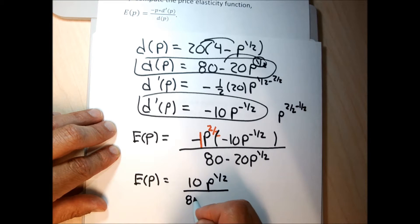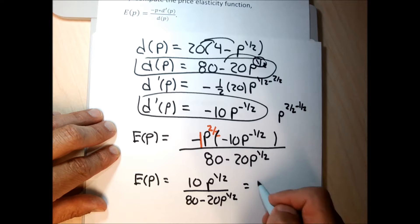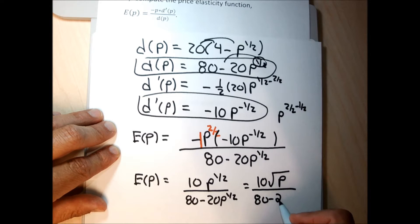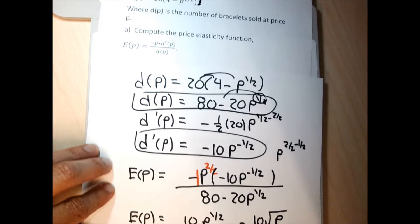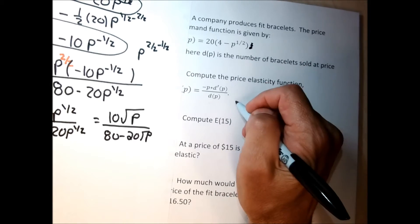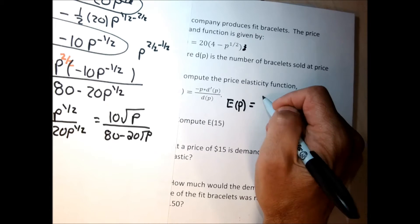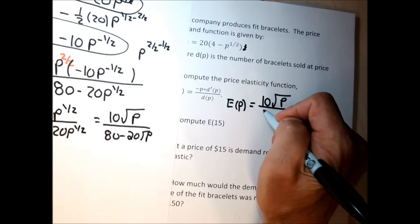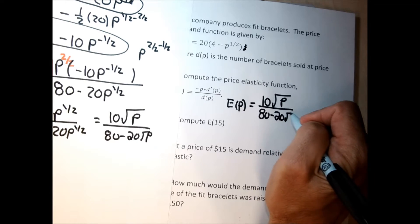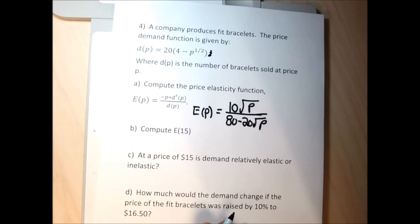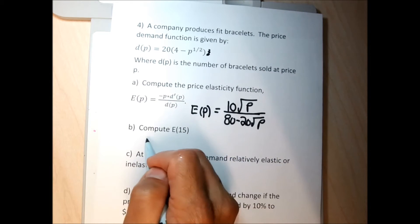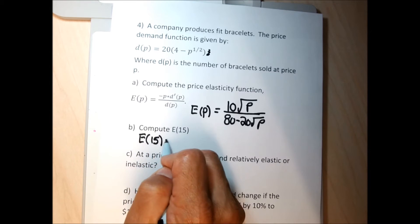So the answer to part A is E(P) equals 10√P over 80 minus 20√P. That's probably the nicest form of this function to answer questions. Now on to part B: compute E(15). E(15) is what I get when I plug 15 into the function I just found: 10√15 over 80 minus 20√15.